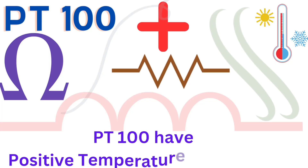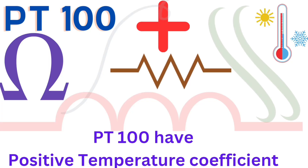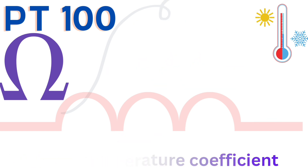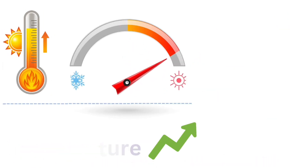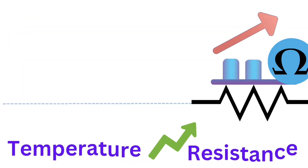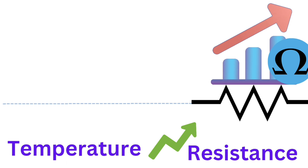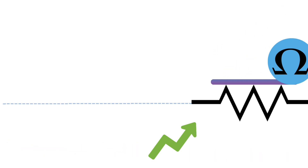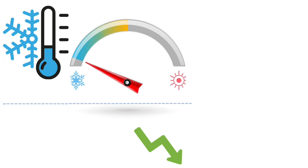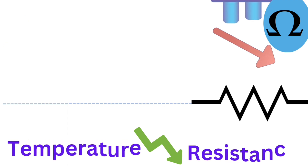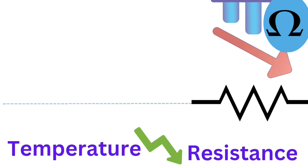PT100 has a positive temperature coefficient. When the temperature increases, the resistance value increases. Similarly, when temperature decreases, the resistance value decreases.